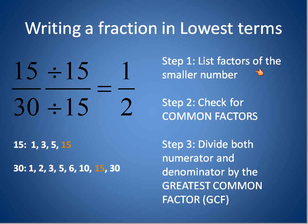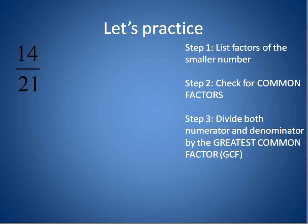That is how we write a fraction in lowest terms. You list the factors of the smaller number, check for any common factors, and divide both the numerator and denominator by the greatest common factor. We're going to practice now using all sorts of different numbers, following these exact same steps. Step one, list the factors of 14. We know 1, 2, 7, and 14 are all factors of 14, because 1 times 14 and 2 times 7 will give us 14.